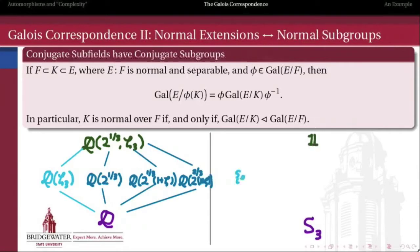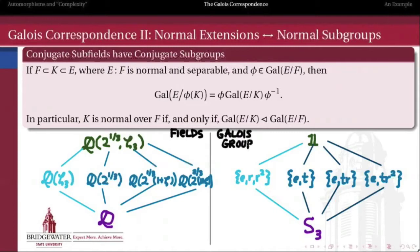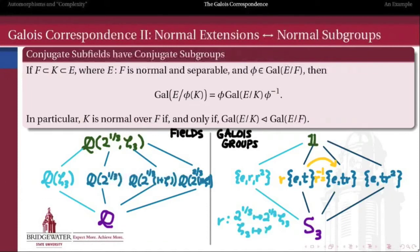This correspondence between normal subgroups and normal extensions is likely why we use the word 'normal' to describe a normal field extension. Here again are the two pictures: on the left the subfield lattice of Q adjoined 2^(1/3) and ζ₃, the splitting field of t³ - 2; on the right the subgroup lattice of S3, the Galois group of that polynomial. If we take the subgroup {e, t} and conjugate it by r — an element from outside that subgroup — we find by computation in S3 that the conjugate gives us {e, tr}, not the same subgroup. Therefore {e, t} is not a normal subgroup of S3. Those two subgroups are conjugate by the element r, the automorphism which sends 2^(1/3) to 2^(1/3)·ζ₃.